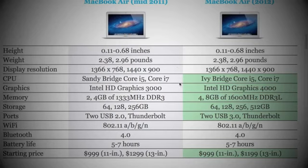When we move on to CPU, that's where you see a difference. The older model had a Sandy Bridge Core i5 or Core i7, depending on what you chose, but the new MacBook Air has an Ivy Bridge Core i5 or Core i7 processor.